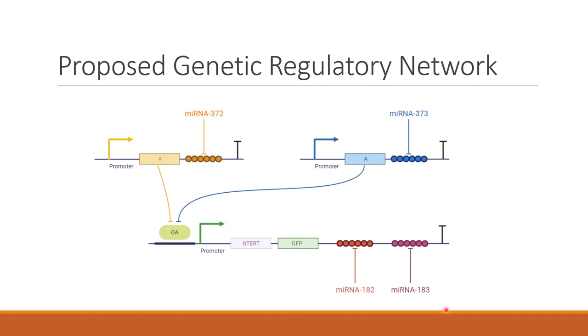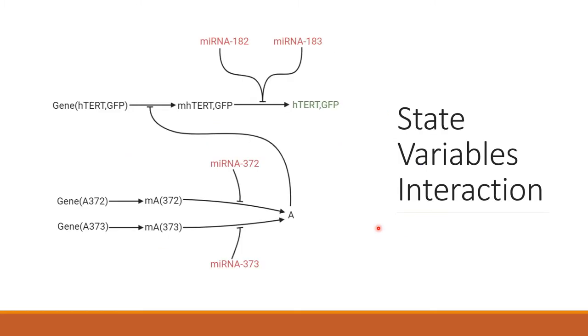Here we can see the state variables proposed for the model. So here in red we have the inputs of our model, so here we can see the microRNAs. And here we can see our output in green. Everything that is in black—messenger RNAs, genes, our repressor protein A—these are going to be our state variables in the model.